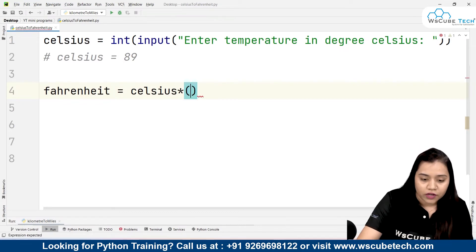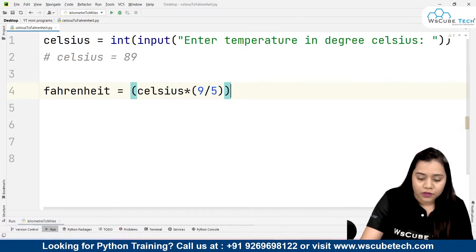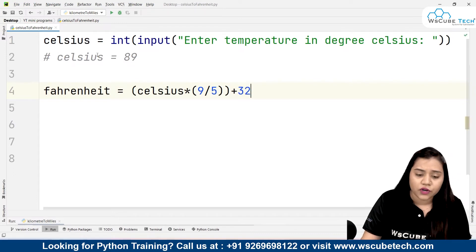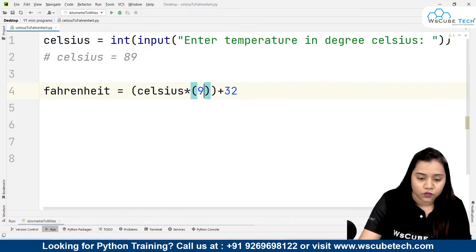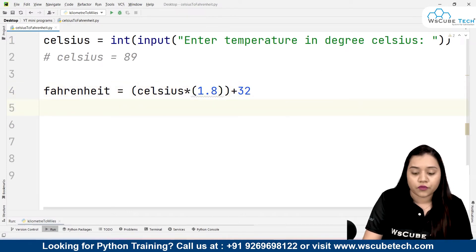If you want to write 9 by 5 then you need to put a bracket over here and inside that you can write 9 by 5. And put the whole inside a bracket then this whole value will be added to 32. So if you want you can write 9 by 5 or if you want you can write 1.8. Both will make no difference.